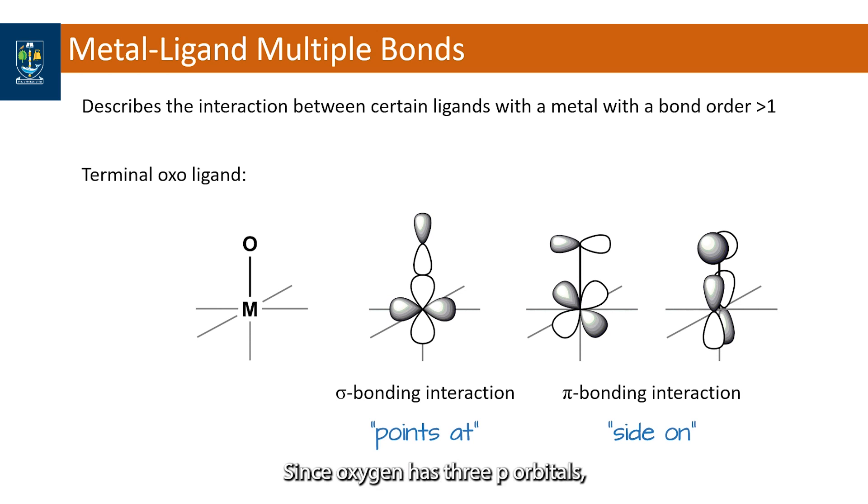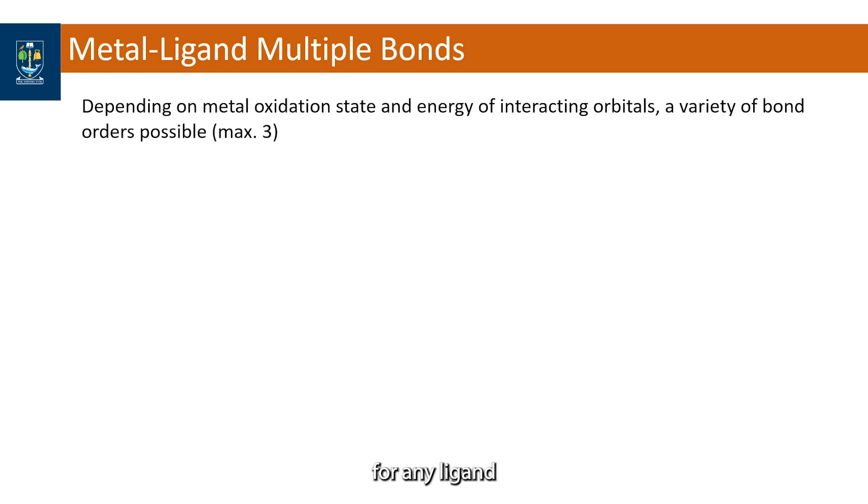Since oxygen has three p orbitals, it can produce maximally one sigma and two pi bonds. Therefore, the maximum bond order for any ligand is three, as they are all p-block elements.